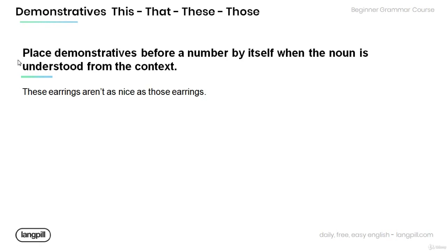Note that we can place demonstratives before a number by itself when the noun is understood from context. Have a look at the sentence over here, find a noun that can be understood from context, and then replace it with a number. Note to use demonstratives before a number. These earrings aren't as nice as those earrings.